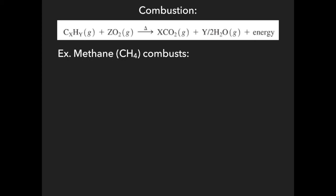For example, methane — CH₄ — reacts with oxygen to form carbon dioxide and water. The hardest part of combustion reactions is balancing. Always balance carbons first, then hydrogens, then oxygens. There is one carbon on each side, so that's fine. There are four hydrogens on the reactant side and two on the product side, so put a two in front of water. On the product side there are two oxygens from CO₂ and two from water, totaling four — so put a two in front of O₂. Those are all five types of reactions.